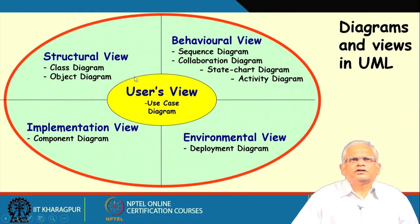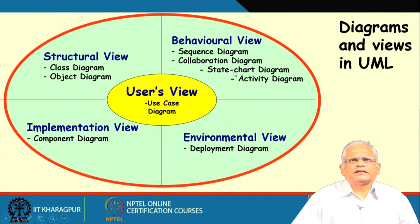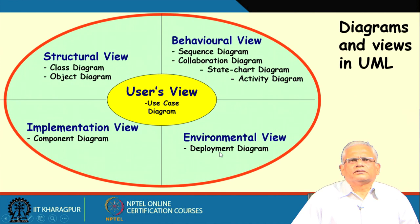The central view is the users view, which is the first to be constructed; other views are built based on it. The diagram used to model the users view is the use case diagram. The structural view is modeled using class and object diagrams. The behavioral view uses sequence diagrams, collaboration diagrams, state chart diagrams, and activity diagrams. The implementation view uses component diagrams, and the deployment diagram shows how components are deployed on different physical computing elements like processors and I/O nodes.